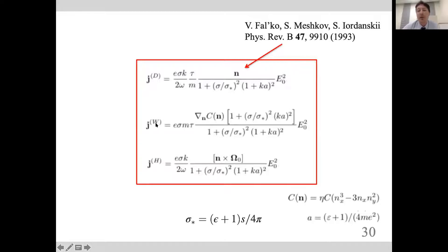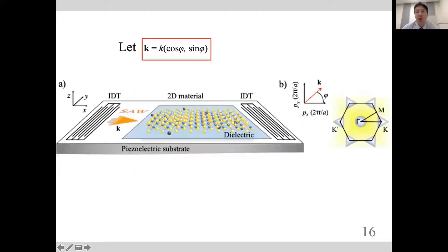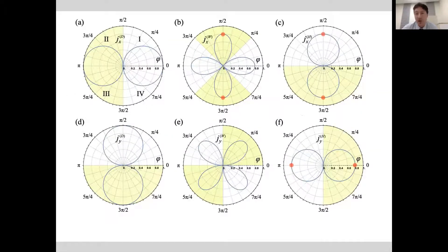We also found the warping-correlated current and the Hall current. The warping current is due to the special form of the valleys in reciprocal space, and the Hall current is due to finite Berry phase. These two currents can be directed perpendicular to the direction of propagation of the acoustic wave, which is quite interesting. If we parameterize the wave vector of the acoustic wave using cosine and sine, we can find different angular patterns of this current.